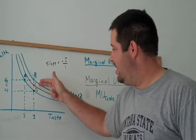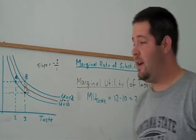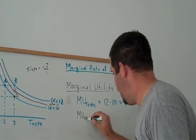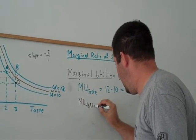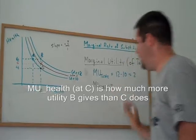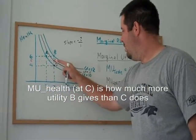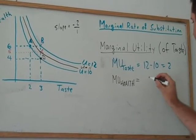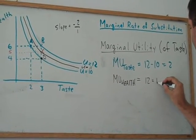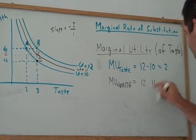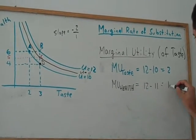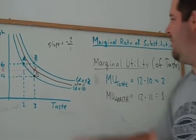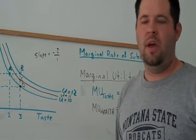And so, the marginal utility is the difference in utilities there. So, the marginal utility of health equals the difference: 12 minus 11. And so, our marginal utility of health equals 1, because our utility is one more when we have one more unit of health.